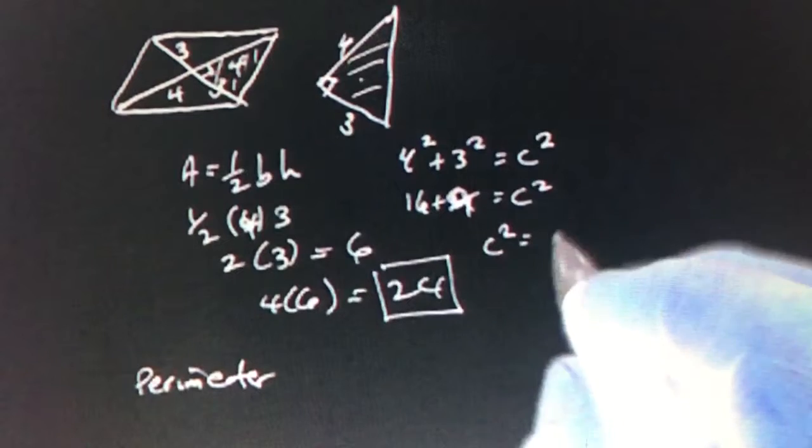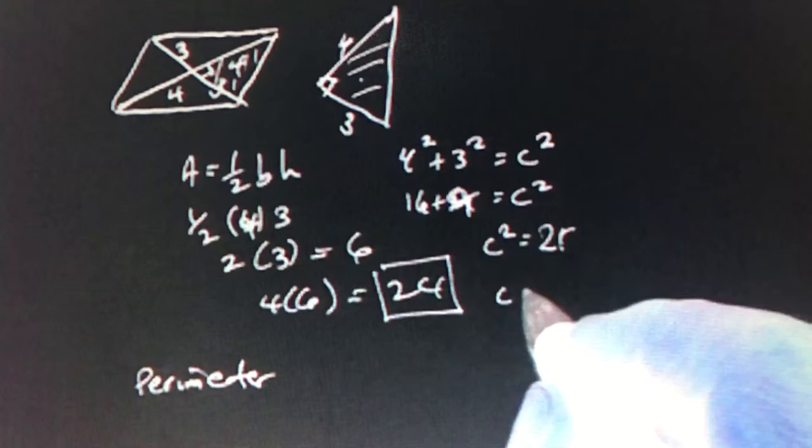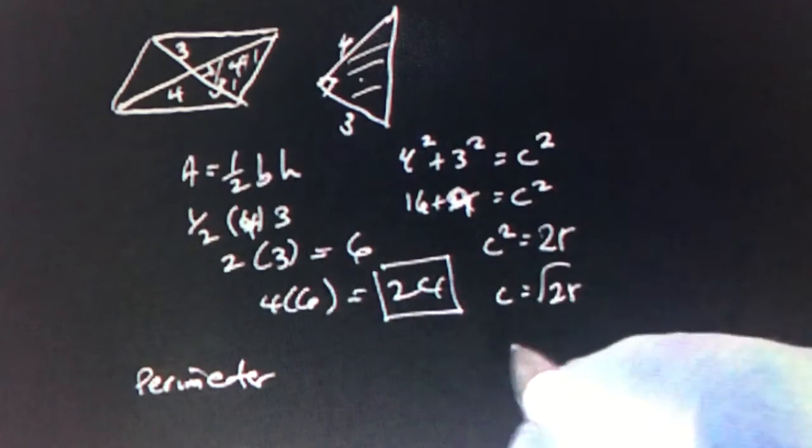16 plus 9, which equals C squared, is equal to 25. And therefore, C equals the root of 25, which is equal to 5.